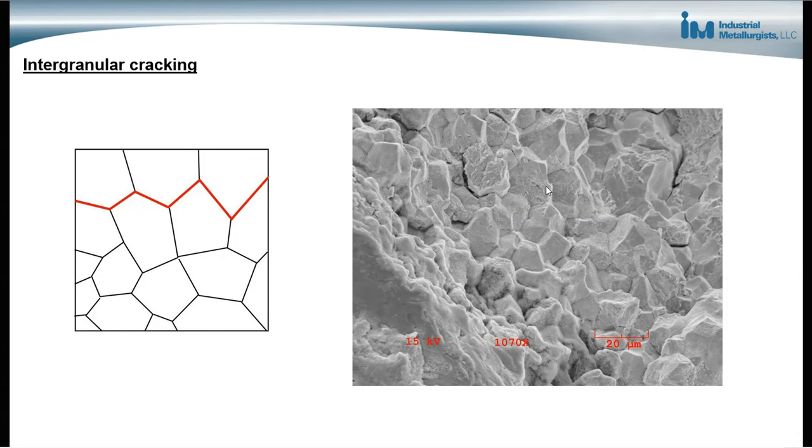The fracture mode is called intergranular cracking because the crack goes along the grain boundaries of the metal. So this shows the crack going along the grain boundaries in the metal. For example, the image on the right is a scanning electron microscope image of a steel fastener that fractured due to hydrogen embrittlement. And what we see individual grains along the grain boundaries, individual grains along the fracture surface. And that's because the crack moved along the grain boundaries as it progressed through the metal.